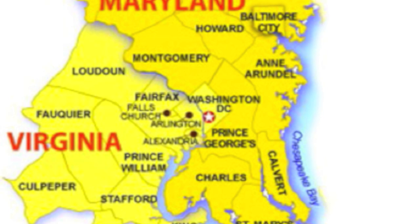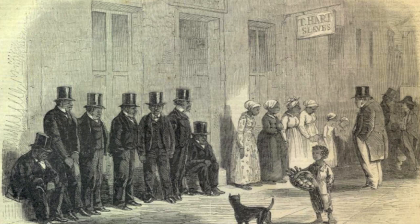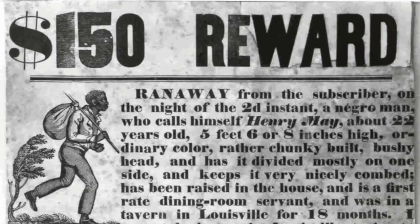Third, Congress could not abolish slavery in D.C. as long as Virginia and Maryland remained slave states, and Congress could not abolish slavery without the consent of the district's people. Fourth, Congress could not interfere with the interstate slave trade.